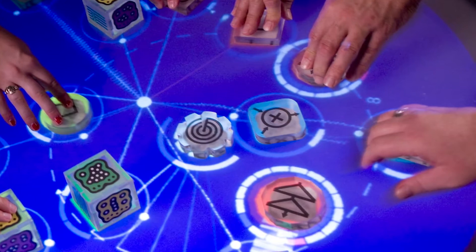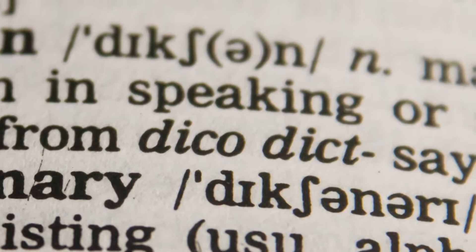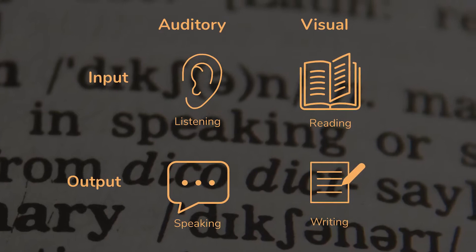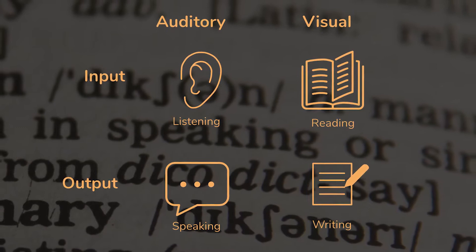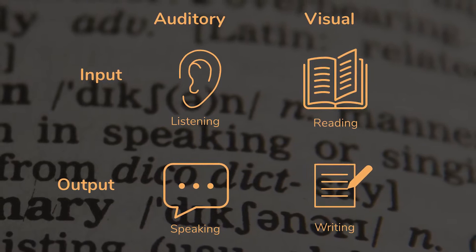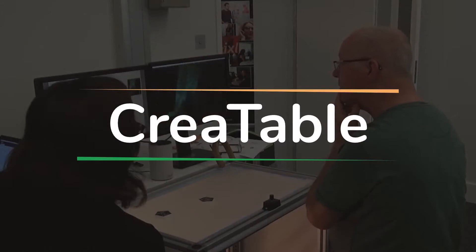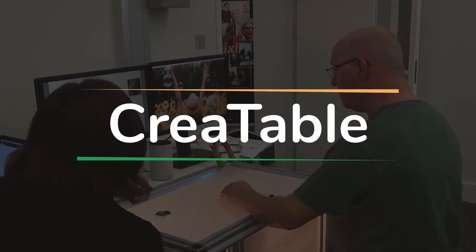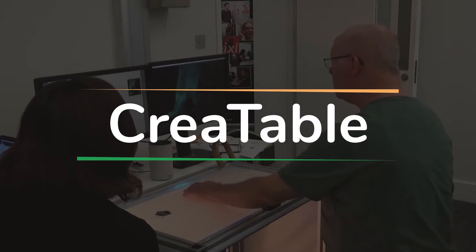Aphasia is an acquired language impairment, most commonly caused by a stroke, but can be caused by other forms of damage to language regions of the brain. It can affect reading, writing, speech and comprehension. The aspects of language affected can vary significantly between people. Some people might be only able to produce a few words but retain good levels of auditory comprehension. Against this context, we present Creatable, a tangible platform and media sequencer app developed to support people with severe aphasia in creating expressive multimedia digital content.